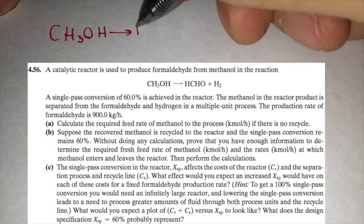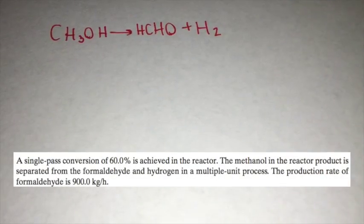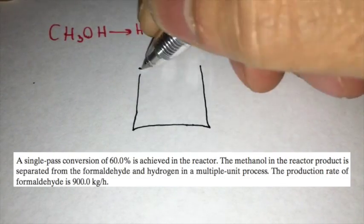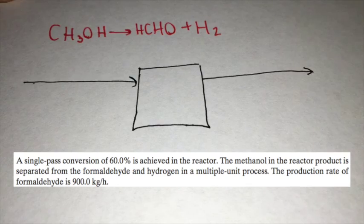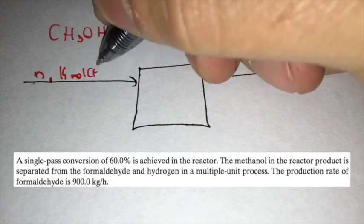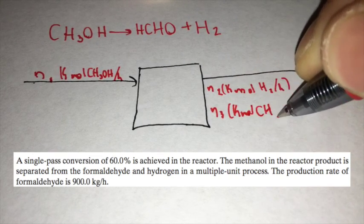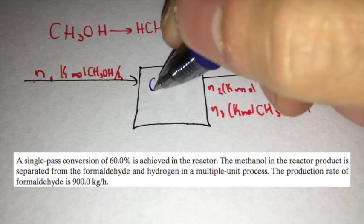A catalytic reactor is used to produce formaldehyde from methanol. A single pass conversion of 60% is achieved in the reactor. The methanol in the reactor product is separated from the formaldehyde and hydrogen in a multiple unit process. The production rate of formaldehyde is 900 kg per hour.